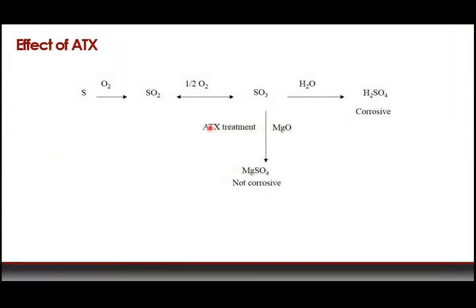The chemistry behind the action of magnesium in ATX: sulfur from the fuel oil combines with oxygen to form SO2; a certain amount reacts with additional oxygen to form SO3. Without ATX, that SO3 would eventually combine with water and form corrosive H2SO4 vapor. But if heavy fuel oil is treated with ATX, the magnesium combines with the SO3 and forms magnesium sulfate — which, unlike sulfuric acid, is not corrosive. Through this mechanism, ATX neutralizes corrosion problems.